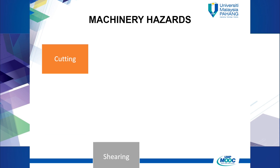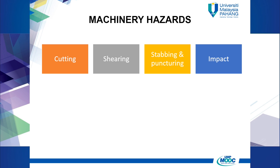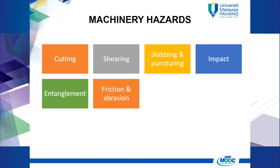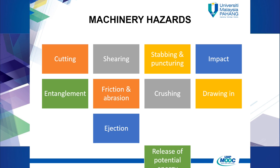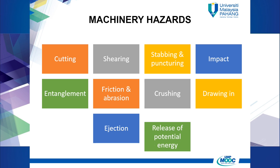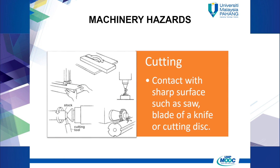There are a lot of machinery hazards that can be found at the workplace. Some of them include: cutting hazard, shearing hazard, stabbing and puncturing hazard, impact hazard, entanglement hazard, friction and abrasion hazard, crushing hazard, drawing-in hazard, ejection hazard, and release of potential energy hazard.